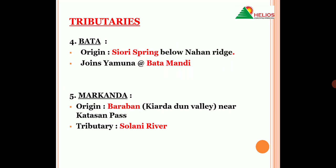Agli tributary jo hai Yamuna river ki, woh hai Bata river, jiska origin hota hai Sirmoor district mein, Siori Spring se — yeh bahot important hai, isko dhyan rakhiyega. Aur yeh directly Yamuna ko join karti hai Bata Mandi pe. Agli river hai Markanda river, jiska origin hota hai Sirmoor mein hi, Baraban region mein, Katasin Pass ki nisdik. Aur iski jo major tributary hai Markanda river ki, woh hai Solani river.